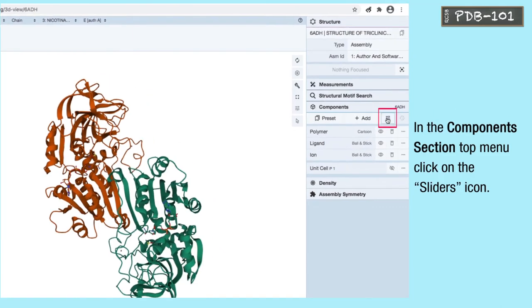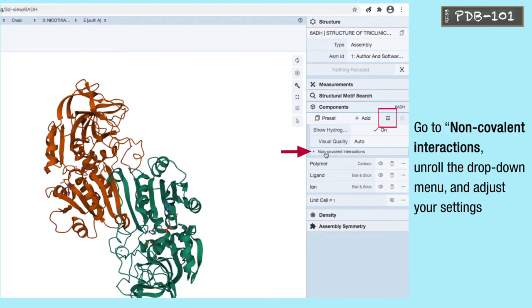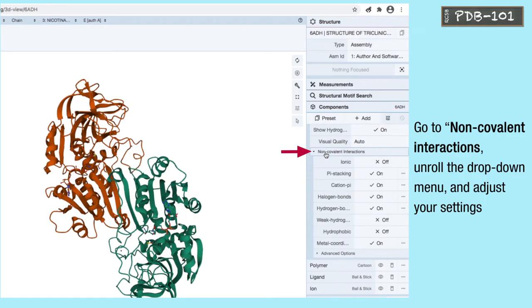In the components section top menu, click on the sliders icon. Go to non-covalent interactions, unroll the drop down menu, and adjust your settings.